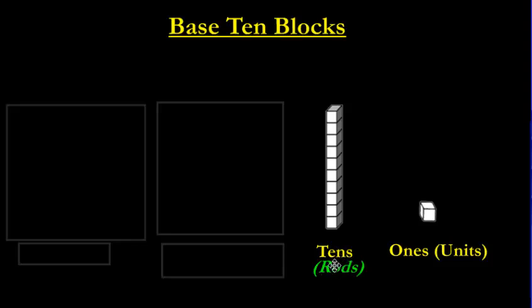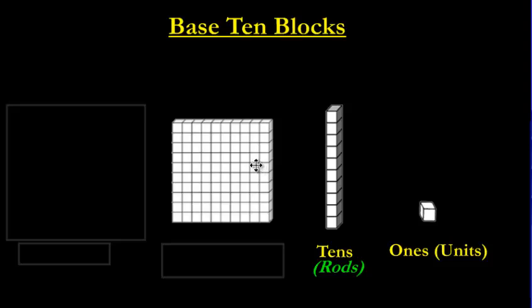We also call it a rod because it looks like a stick, like a rod. Sticks, rods, same sort of idea. Now, look, ten of these side-by-side are going to look like this. Ten rods stuck side-by-side make 100. We've got 100 little ones here. Take my word for it. I'm not going to count them, but if I was going to, you can pause the video and count it if you don't really trust me.